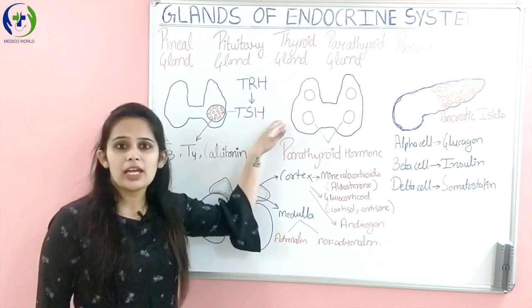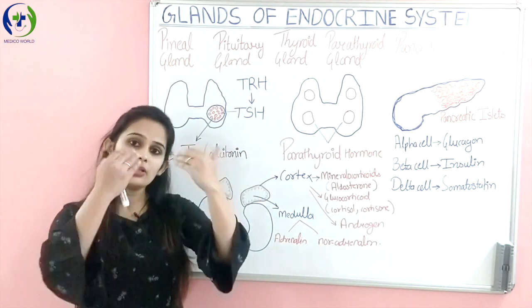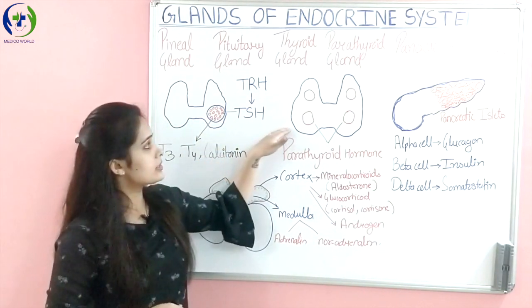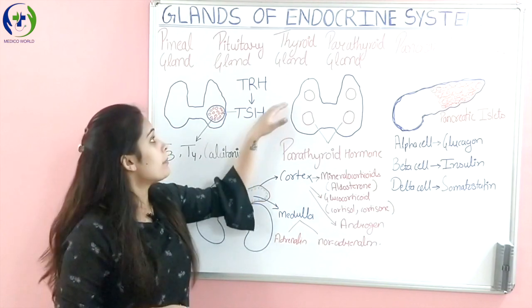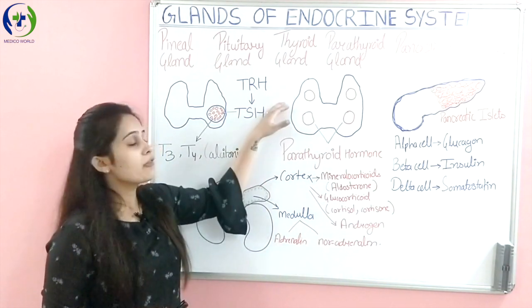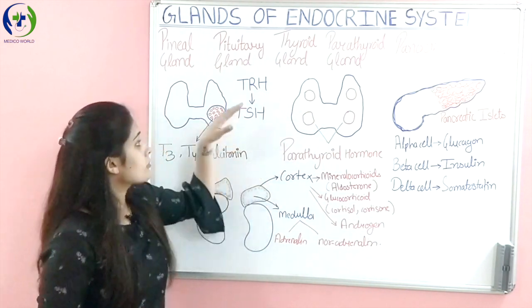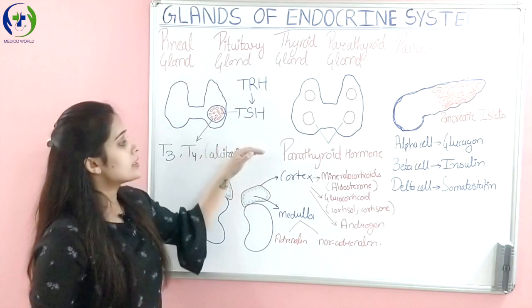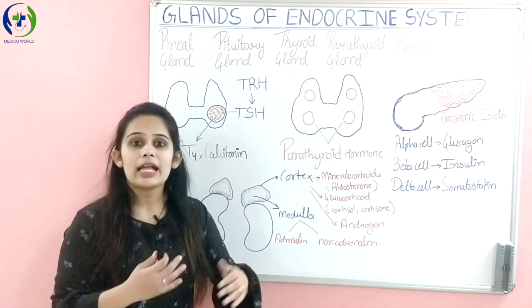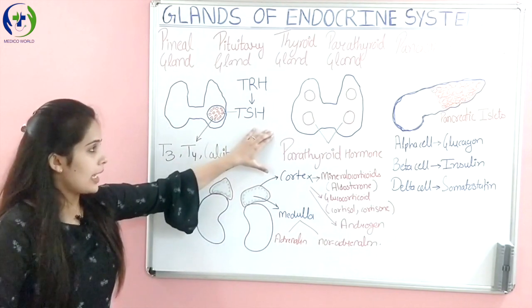Our next major gland is the parathyroid gland, situated behind the thyroid gland. Looking at the back view of the thyroid gland, the parathyroid glands are situated behind it. There are four in number, with two on either side. This parathyroid gland secretes the parathyroid hormone, which regulates the calcium level in the blood.